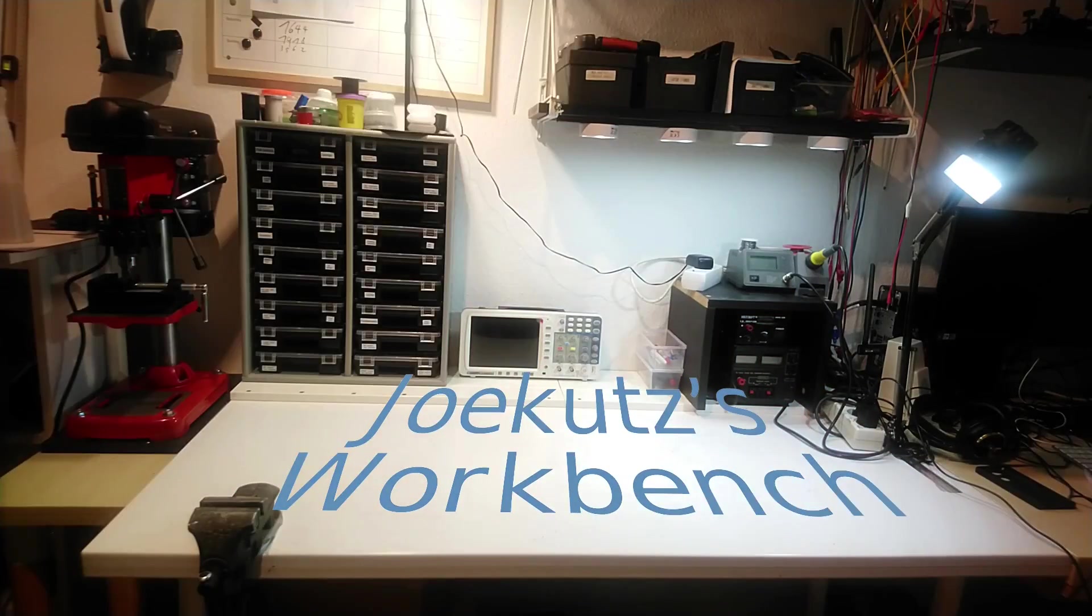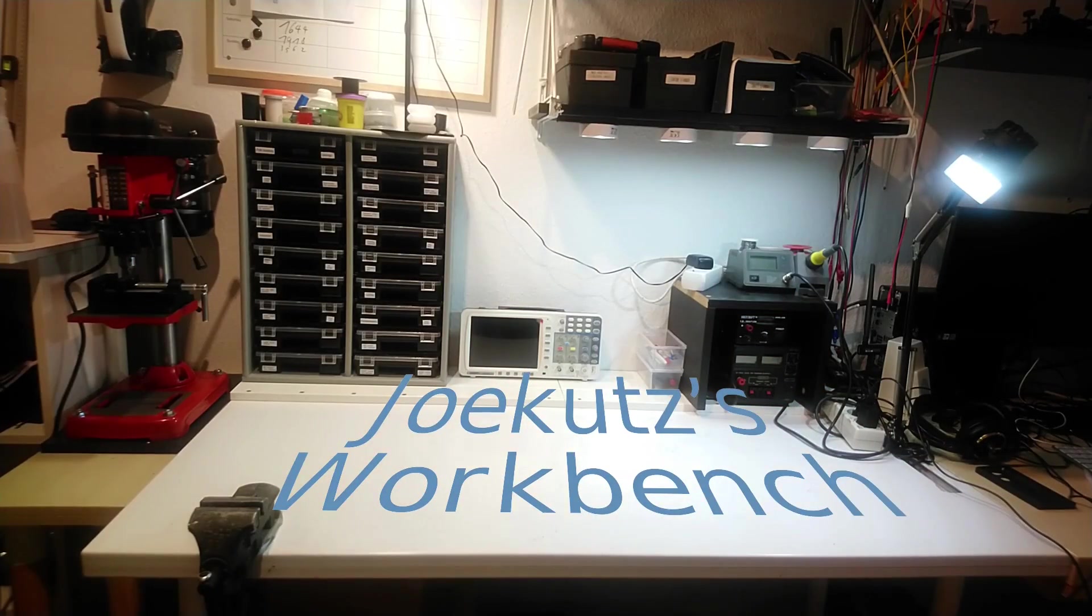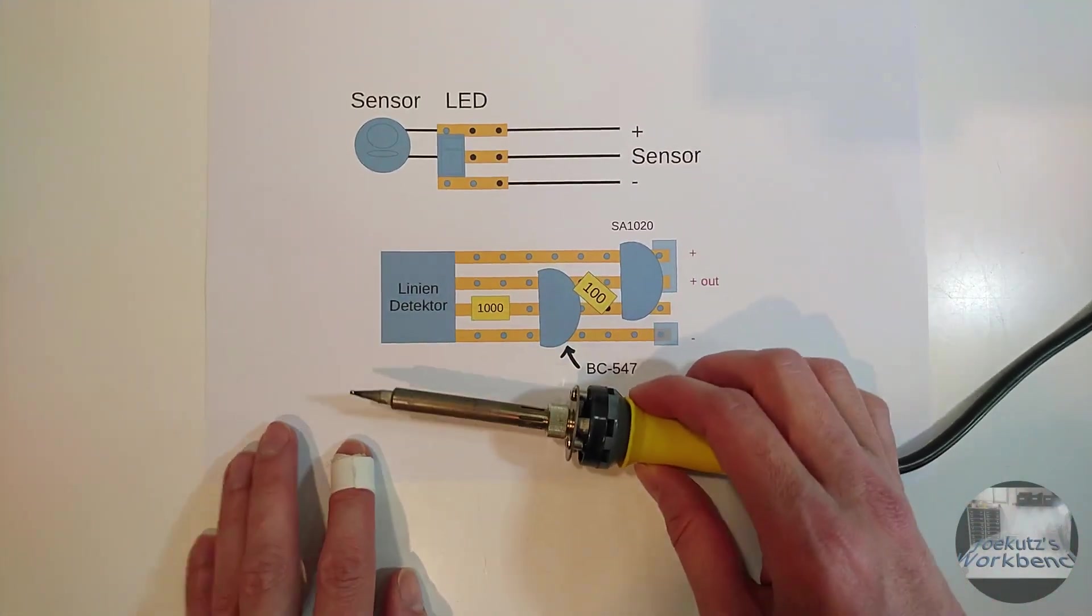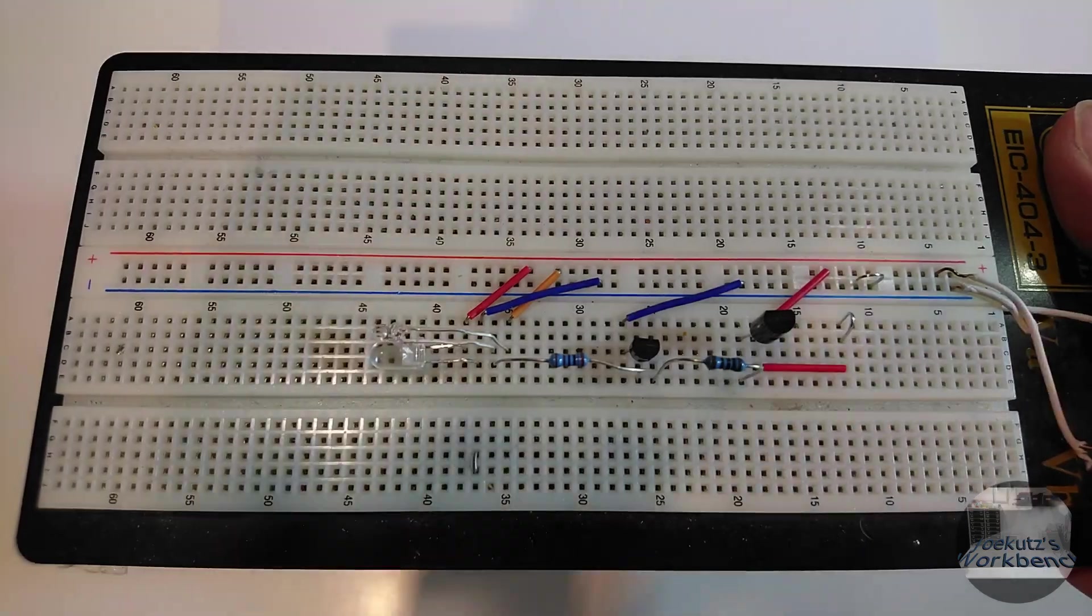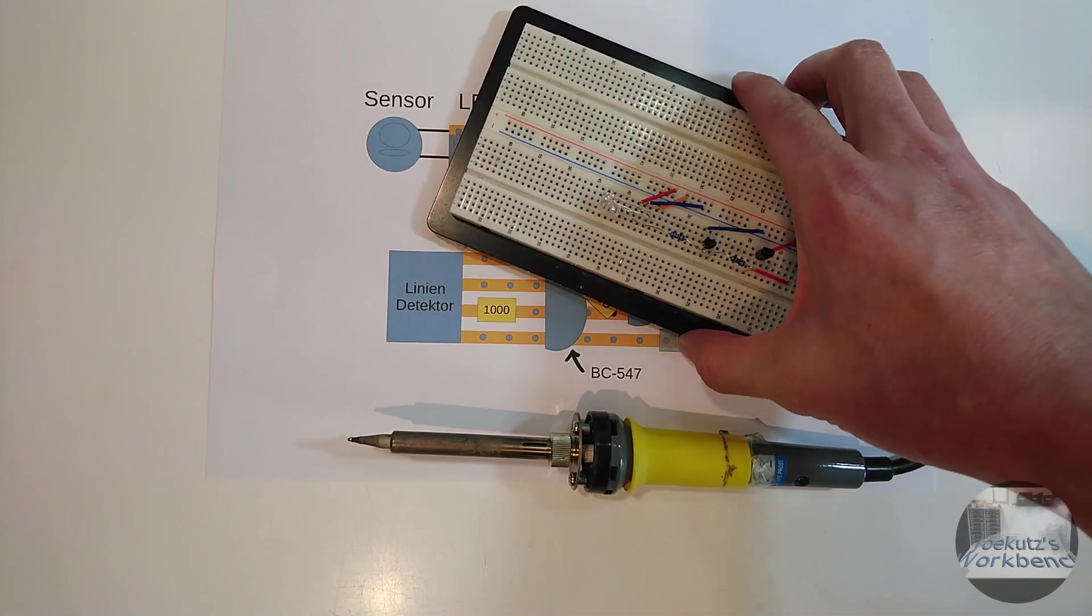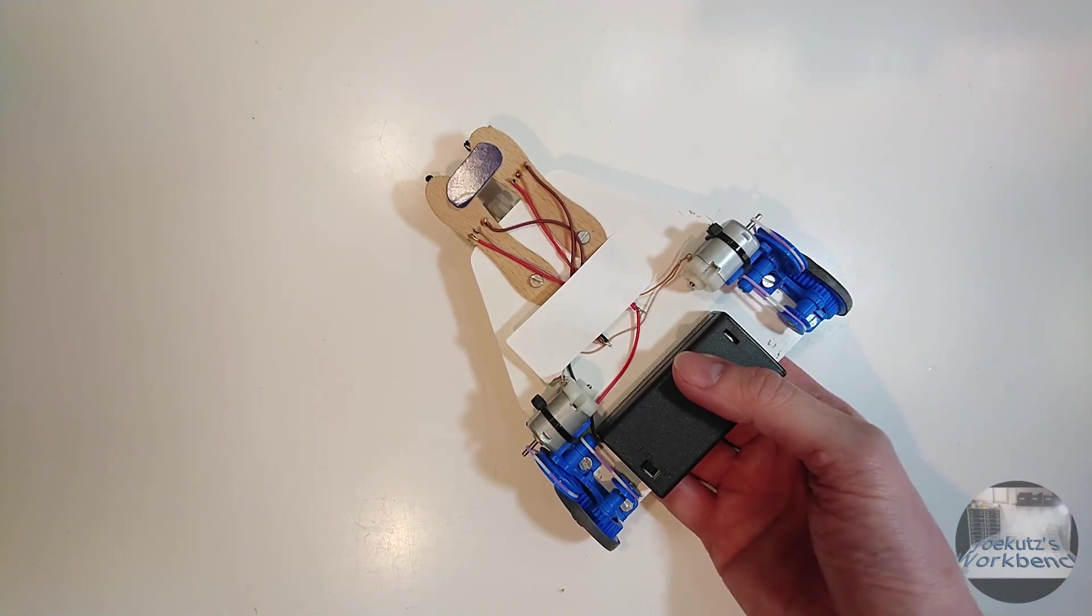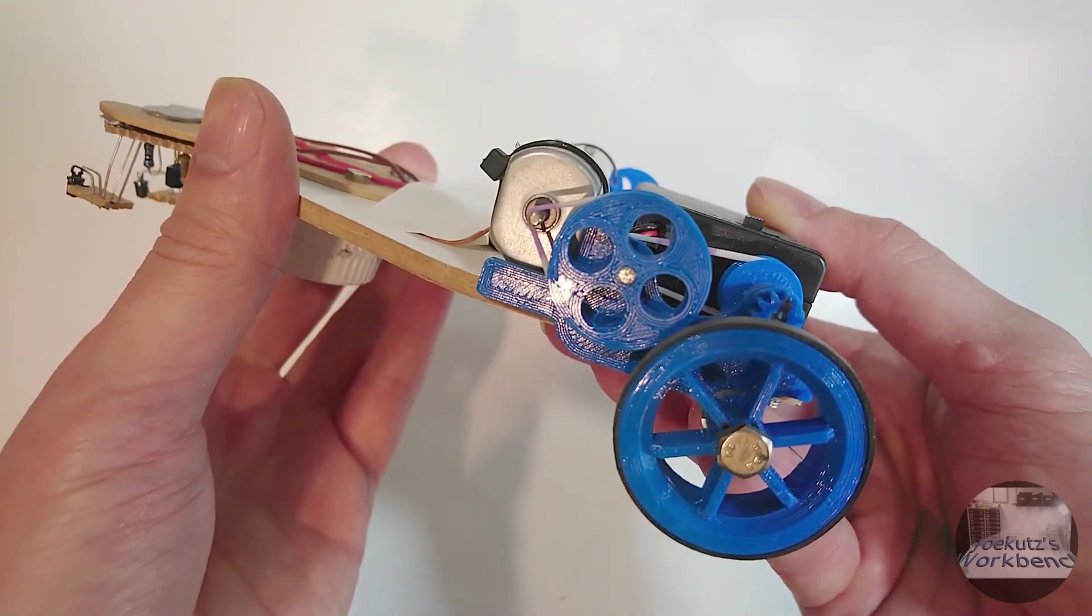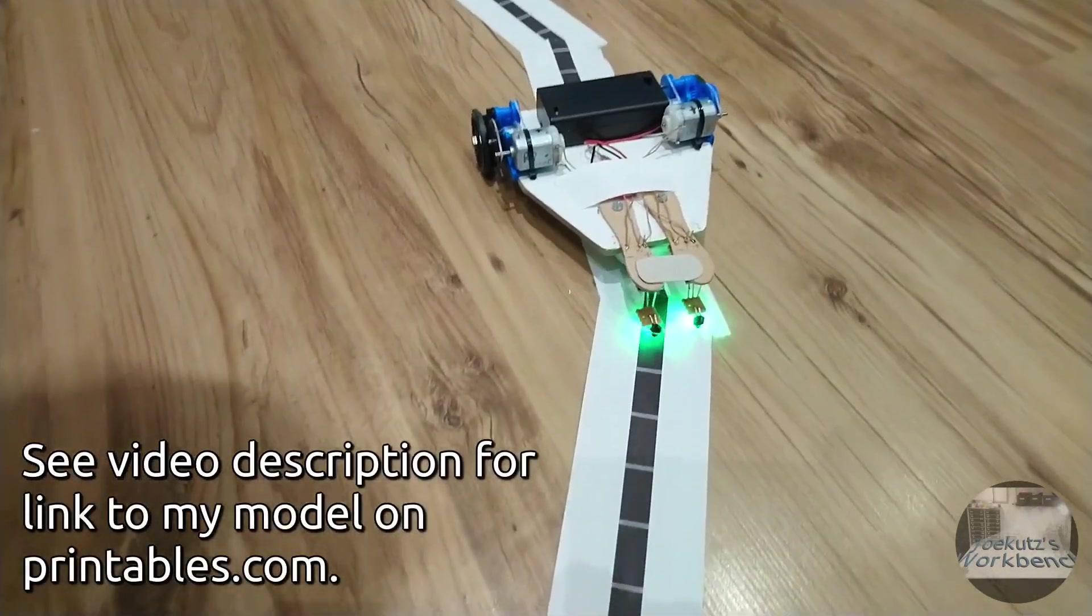Hi there and welcome to Jokut's workbench. Soon I am giving a hands-on course about soldering and tinkering for some kids. I want them to have something to play around with at the end that is easy to understand and that has all moving parts visible. And so I designed little two-wheeled vehicles that can follow a black line.